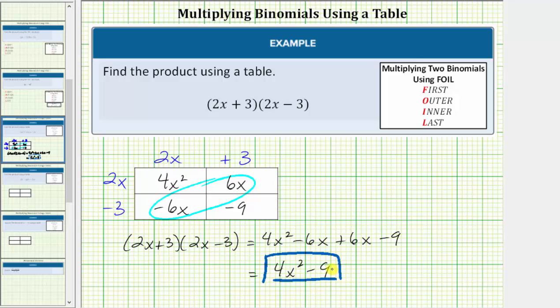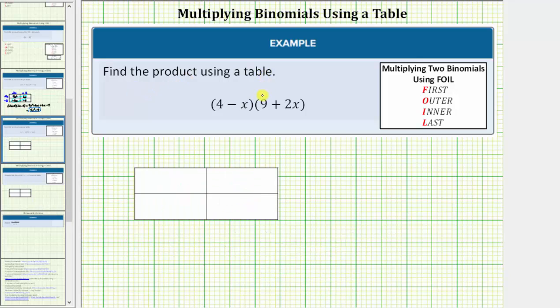Let's look at another example. Again, we're asked to use a table to find the product of the two binomials. So on top of the first two columns, we'll write 4 minus x. To the left of the first two rows, we'll write 9 plus 2x.